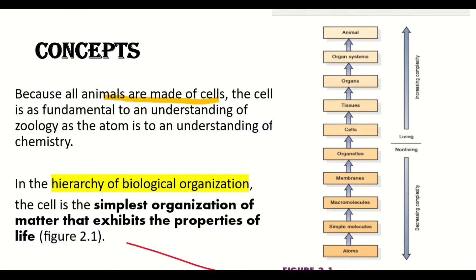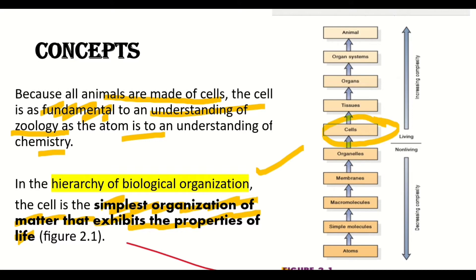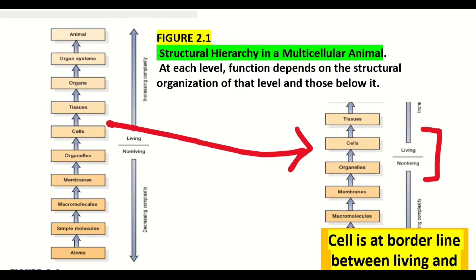Because all animals are made of cells, the cell is as fundamental to an understanding of zoology as the atom is to an understanding of chemistry. In the hierarchy of biological organization, the cell is the simplest organization of matter that exhibits the properties of life. Cells are found at the borderline between non-living and living organisms, making them the simplest organizational unit of life.